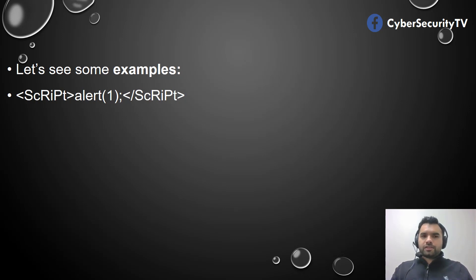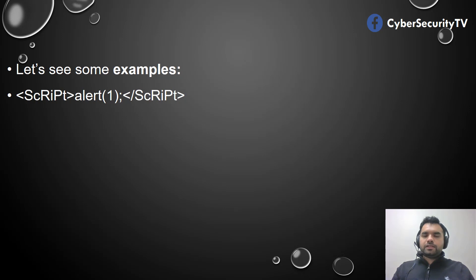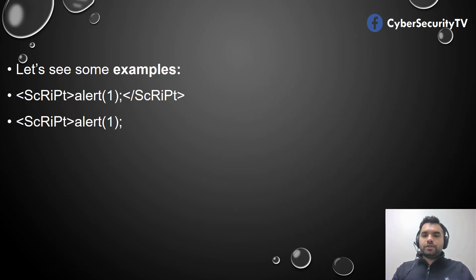The first example is a mixed-case script tag — writing the tag with alternating capital letters, like a capital S, capital R, capital P. Sometimes a filter only blocks the script tag if it finds it all in capitals, all lowercase, or just the first letter capitalized, so mixed case can bypass it. The second option is you write the script tag but do not include the closing end-script tag. Surprisingly, many applications only block the script tag if it finds the matching end tag, so omitting it might still allow the payload to execute.